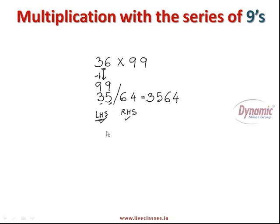I hope you must have understood this. I repeat it once again. 36 multiplied by 99, you will get the answer in two parts: left and right side. For the left side, you will subtract 1 from the given number, that is 36 minus 1 gives you 35. Write it as the left hand side answer. For the right hand side, just subtract the number you have got on the left hand side from 9's. That means 9 minus 3 gives you 6, 9 minus 5 gives you 4. So the complete answer is 3564. Are you finding it easy?